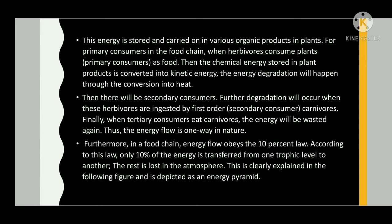Energy flow is one-way in nature. In a food chain, energy flow obeys the 10 percent law: only 10 percent of energy is transferred from one trophic level to another, and the rest is lost to the atmosphere. This is depicted as an energy pyramid.